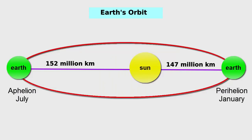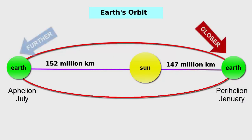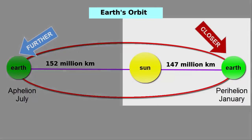The farthest point of the Earth from the Sun is 152 million km — it's called Aphelion. And the closest point is 147 million km — it's called Perihelion.